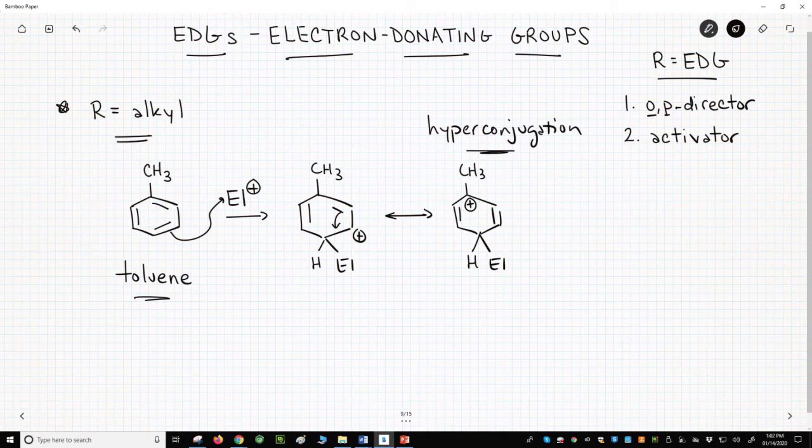This is how alkyl groups act as electron donating groups, ortho-para directors, and activators on benzene rings. Let's look at the second type.